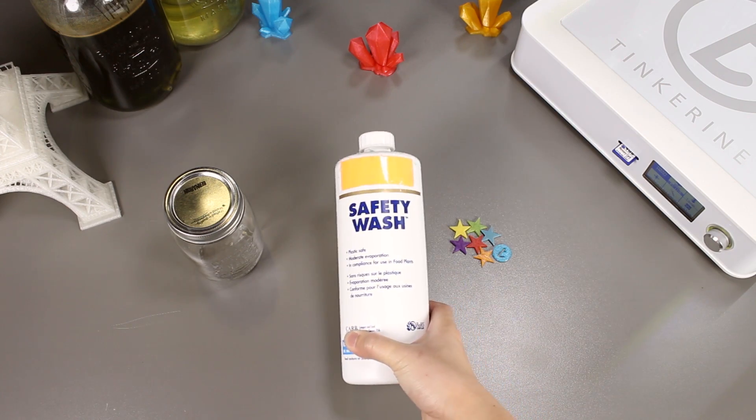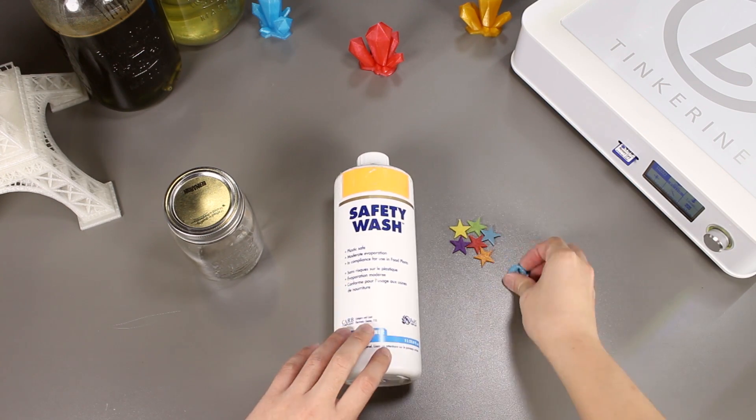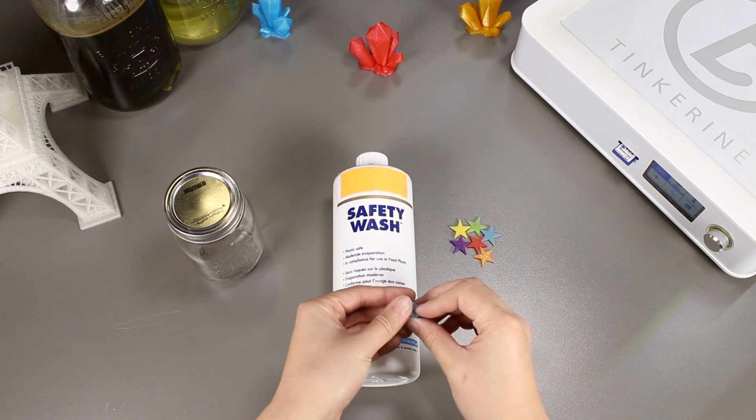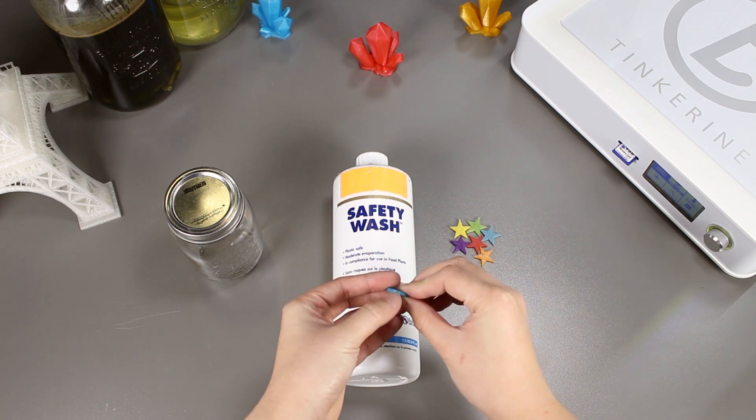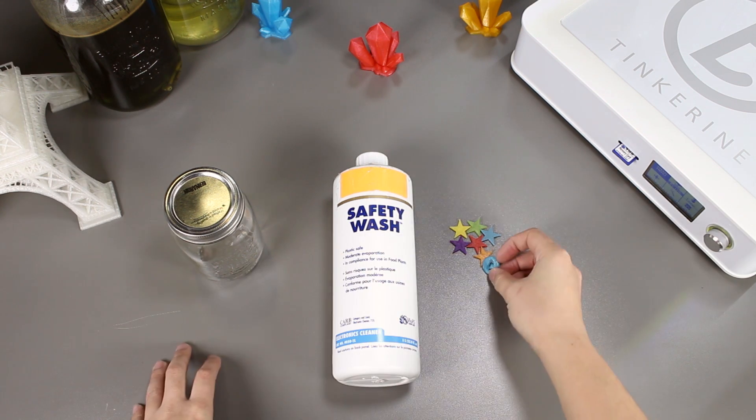Welcome to another episode of Tinkering Experiments. Today we are going to try smoothing our PLA with ethyl acetate. We will find out whether it works or it doesn't.